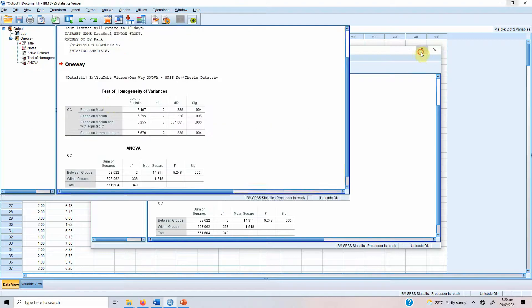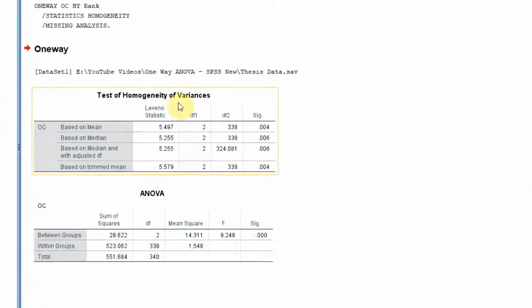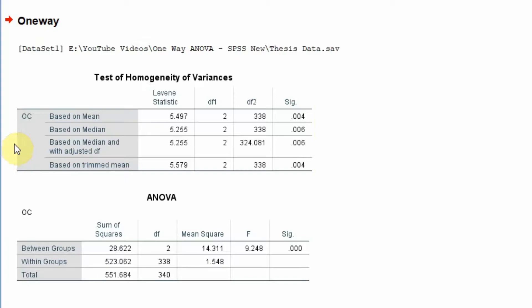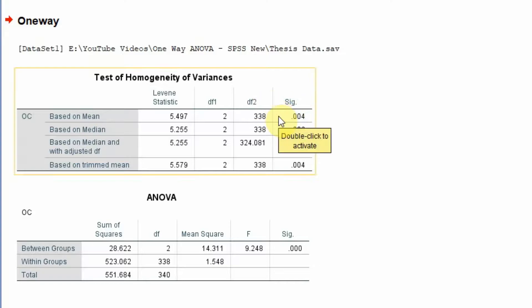Now let's look at the output. In the Test of Homogeneity of Variance, the Levene statistic based on the mean is significant, meaning there are significant differences in the homogeneity of variance across the groups.